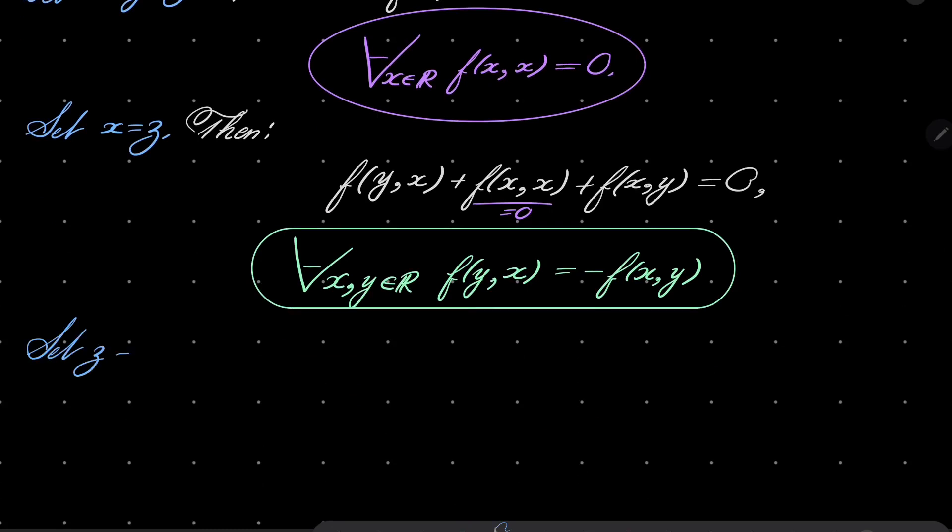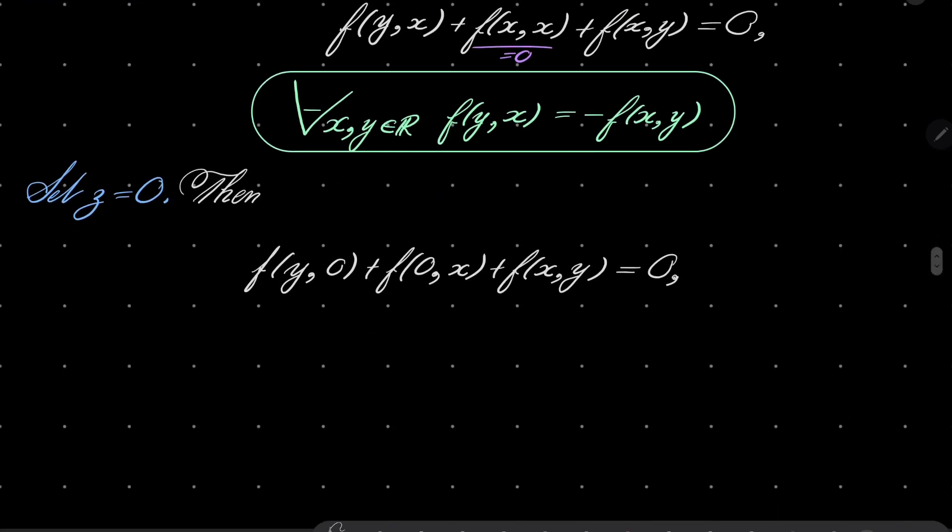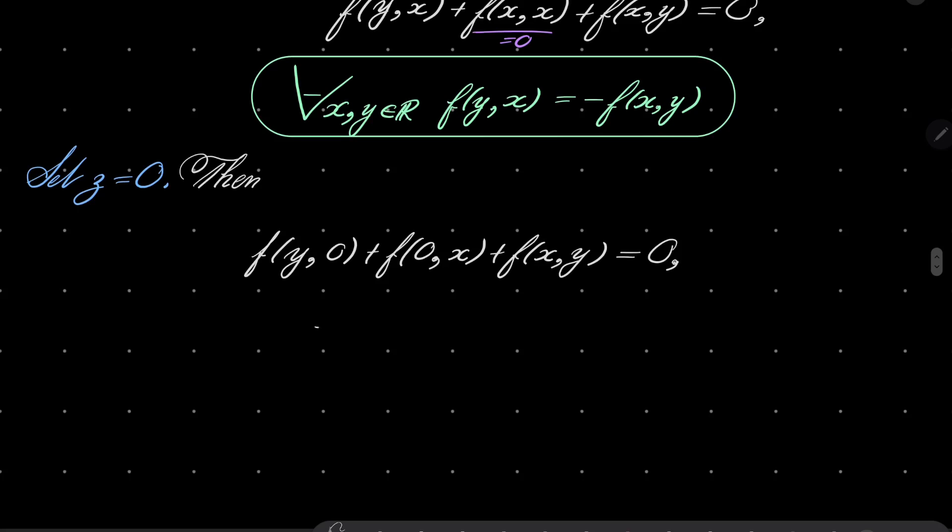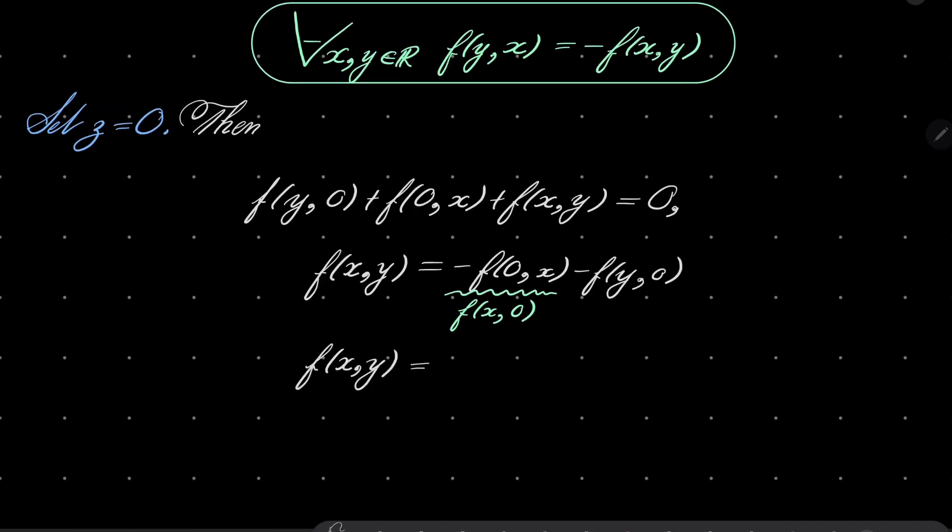And finally let's set z to be 0. Well then if z is 0 we have f of y0 plus f of 0x plus f of xy equals 0. Notice that we can do the following trick. We can write f of xy as minus f of 0x minus f of y0. And now minus f of 0x can be replaced by f of x0 by our previous result. So f of xy equals f of x0 minus f of y0.